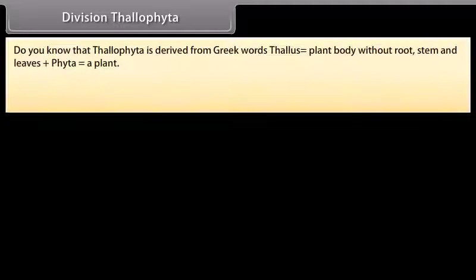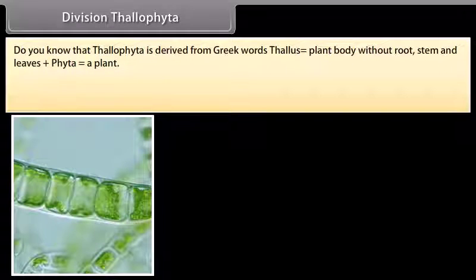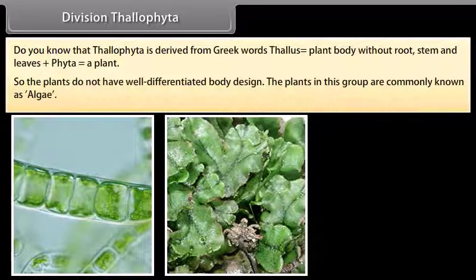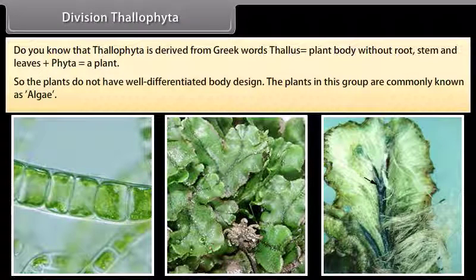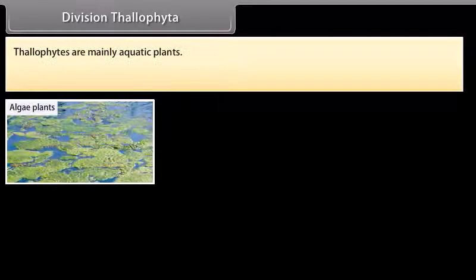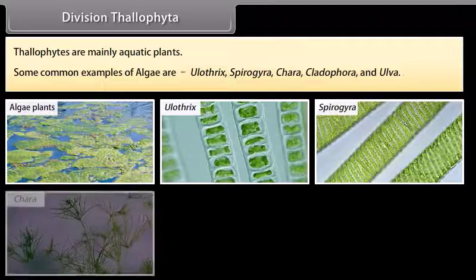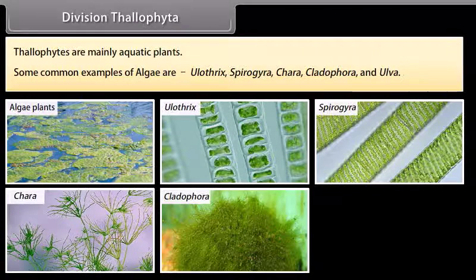Division Thallophyta: Thallophyta is derived from Greek words 'Thallus', meaning plant body without root, stem, and leaves, plus 'phyta', meaning plant. So the plants do not have a well-differentiated body design. The plants in this group are commonly known as algae and are mainly aquatic plants. Some common examples are Ulothrix, Spirogyra, Chara, Cladophora, and Ulva.